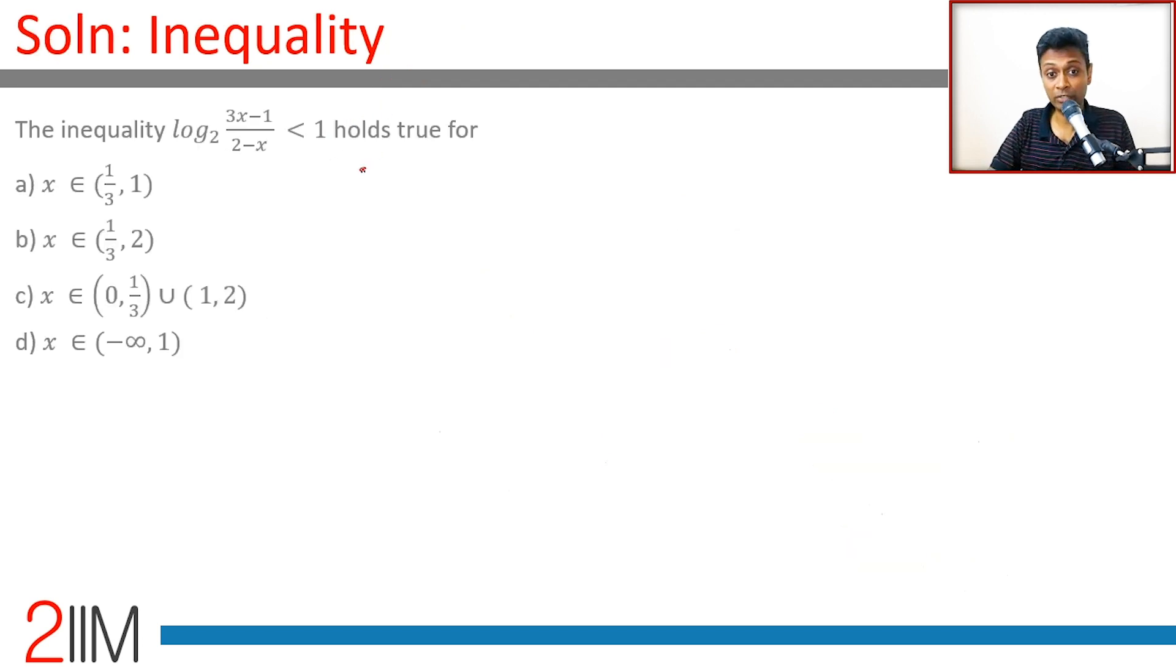So the second inequality we're dealing with is (3x-1)/(2-x) is less than 2. (3x-1)/(2-x) minus 2 is less than 0. (3x-1 minus 4 + 2x)/(2-x) is less than 0.